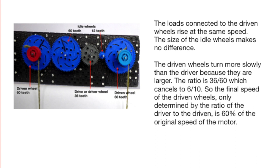The key ratio here is the ratio of the driver to the driven wheel in this case 36 to 60 or 6 to 10. So the speed of the driven wheel is 60 percent of that of the driver.